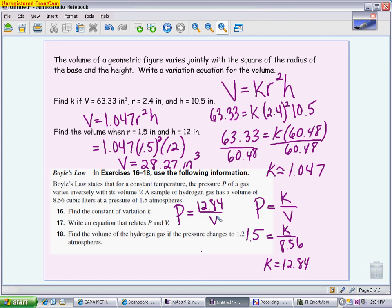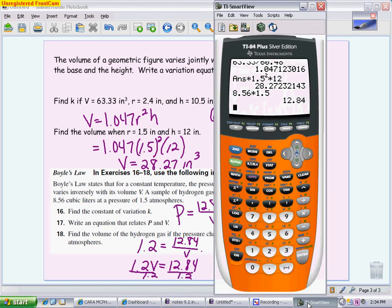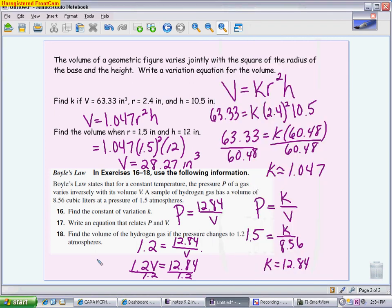And then find the volume if the pressure switches to 1.2. So if P is 1.2, we're going to find the volume. I'm going to multiply 1.2 times V, and then divide both sides by 1.2. So 12.84 divided by 1.2 gives me a volume of 10.7. And volume was being measured in cubic liters. So cubic liters.